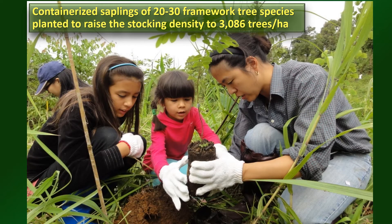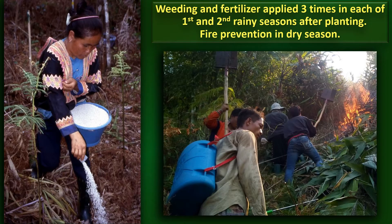We plant about 20 to 30 of these framework tree species on each site, augmenting the natural regeneration already there to achieve a final stocking density of about 3,000 trees per hectare. After planting, the trees receive fertilizer and a weeding treatment at least three times in the first and second rainy seasons after planting, and of course we take care of fire prevention during the dry season.